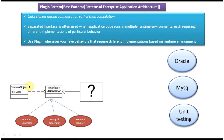Here you can see the domain object. The domain object has an ID value. This ID is nothing but a primary key value in the database table. The ID generation logic we can use based on the different kind of environment. Suppose our environment is Oracle, then we have to use Oracle ID generator. Suppose our environment is MySQL, then we have to use MySQL ID generator. Suppose our environment is unit testing, then we can use some kind of primary counter to generate the IDs and persist them in the database table.